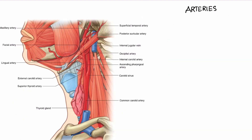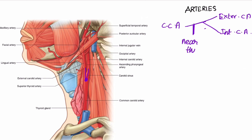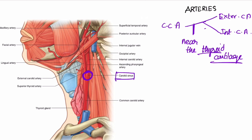Near the thyroid cartilage, the common carotid artery divides into the internal carotid artery and the external carotid artery. There is a dilation in the common carotid artery known as the carotid sinus.